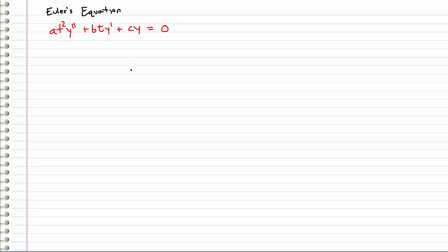So today we're going to be going over Euler's equation. It's kind of like a variant of the constant coefficients, except we don't have constant coefficients. We have non-constant coefficients as you can see from the t squared right here, the t right here, and the c right here.